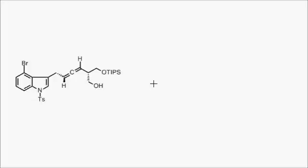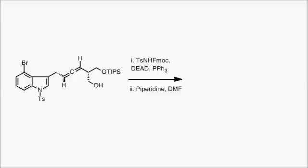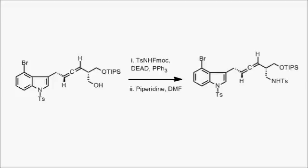With the required diastereomer in hand, the next thing was to swap out the alcohol for a nitrogen. They used Mitsunobu conditions to swap out the alcohol group for this aminotosylate. And then after that comes the main step.